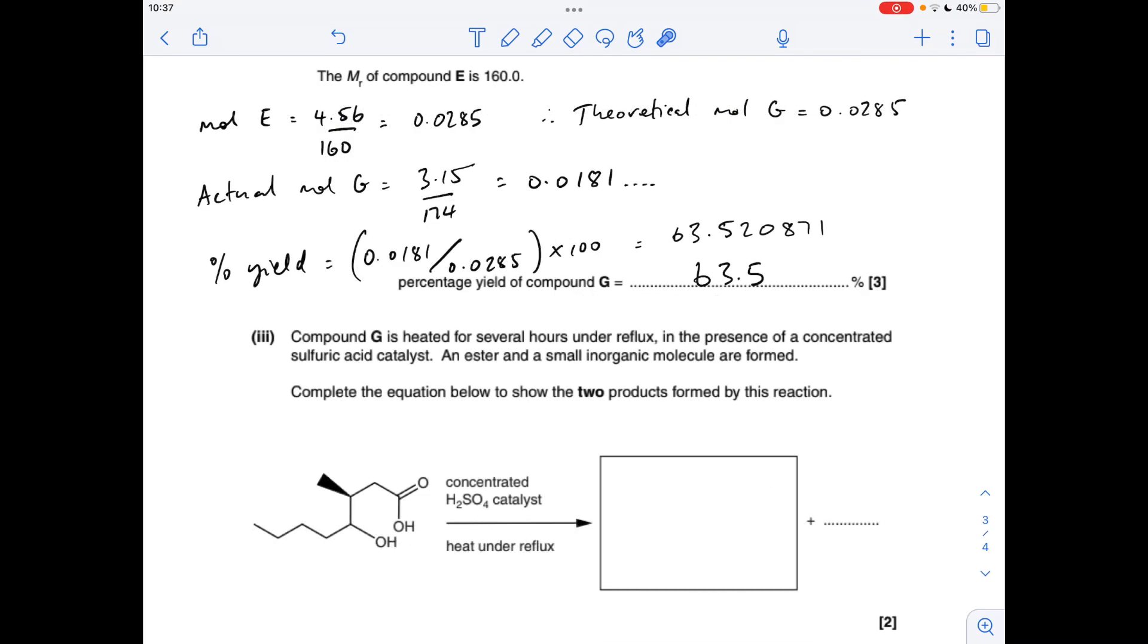For the final part, compound G is refluxed with concentrated sulfuric acid. Think about the functional groups we've got right next to each other: we've got an alcohol group and a carboxylic acid group, so we're going to get an ester. We're going to take out two hydrogens and an oxygen. I'll go for those there, and that will generate an ester group between these two carbons here. The organic product will look like that, and we get a water molecule as well.